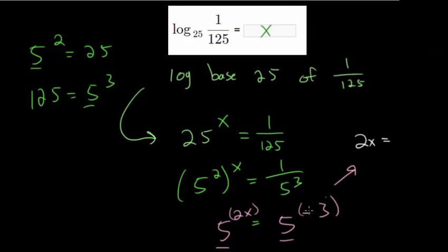So we can write that out that the 2x, the exponent on the left, is equal to the negative 3, the exponent on the right. And this can only be done once you have the same base on each side. So we can solve for x here, divide everything by 2, and x is this negative fraction minus 3 halves.